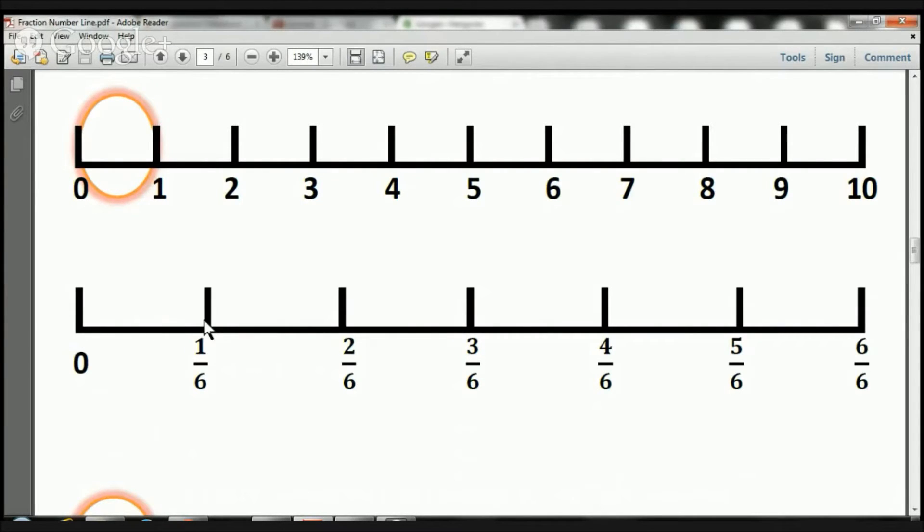From 0 to here, that's 1 6. From 0 to here, that's 2 6. We have 1, 2 pieces, 2 over 6.